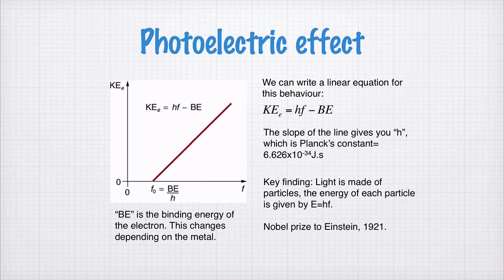So, to summarise the results of that experiment, we saw a curve like this, or a straight line like this, I should say, as a function of the frequency of the light. And this is the energy of the electrons. The slope of this straight line is Planck's constant, H. The intercept here is the binding energy of the electrons in the metal. So, the kinetic energy is equal to HF minus the binding energy. That's the description of this line.